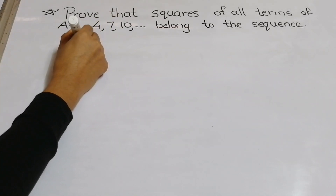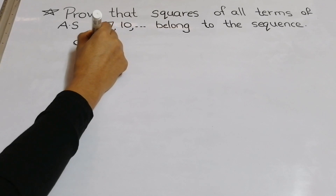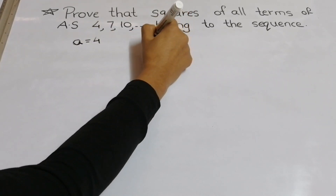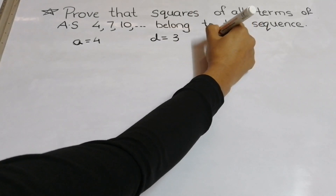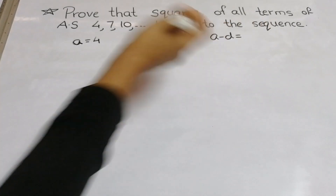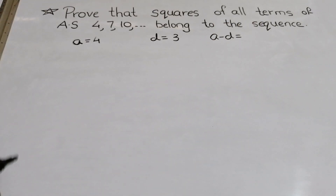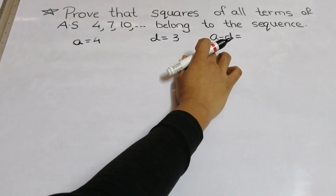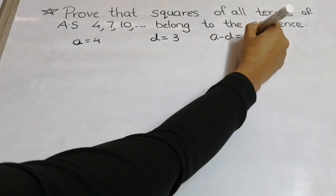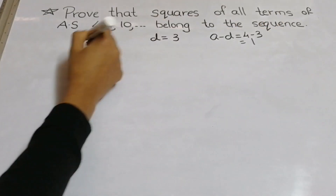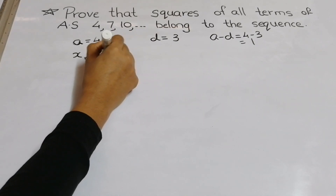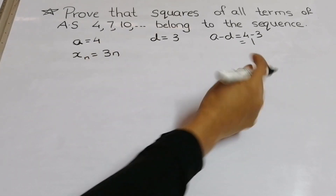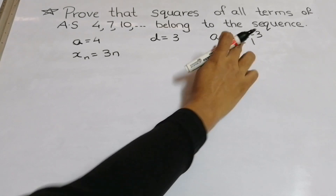First, I am writing the given things. The first term is 4. What is the common difference here? The common difference is 3. What is a minus d? It is 4 minus 3, which is equal to 1. So here we can write xn equals 3n plus 1. This is my algebraic expression.